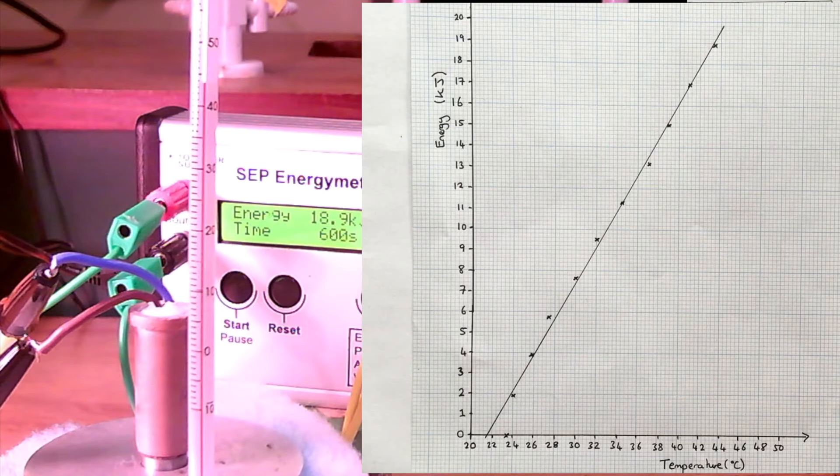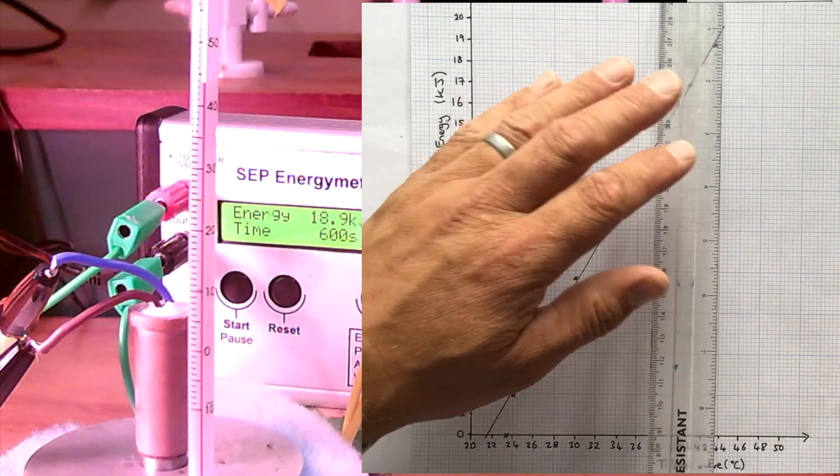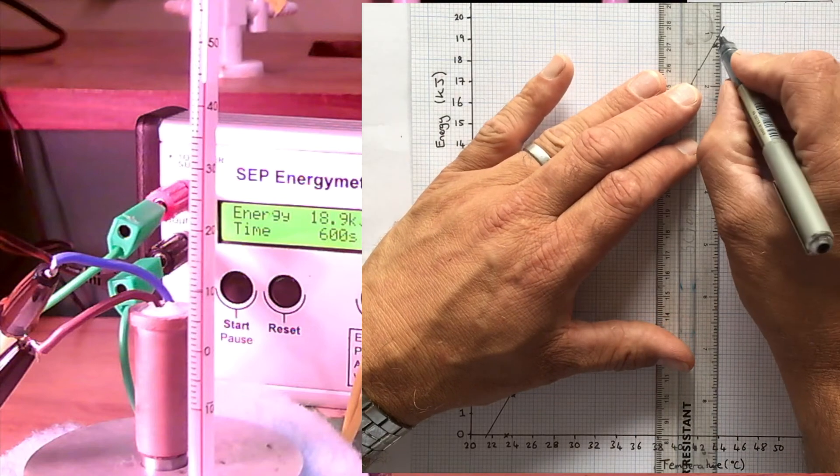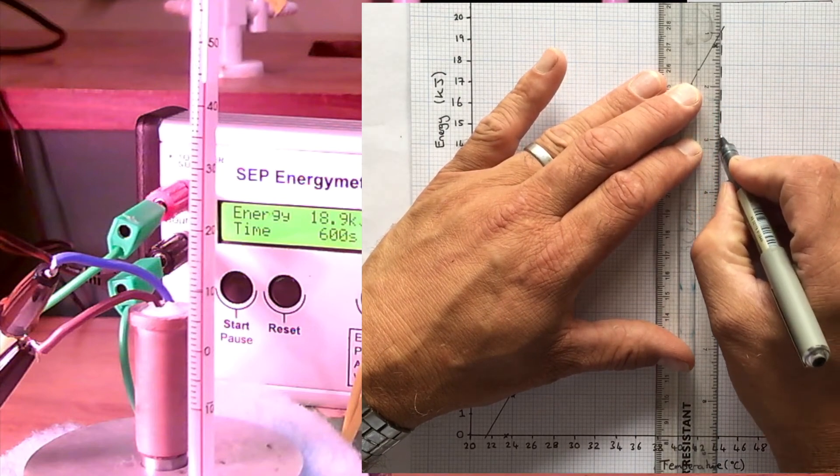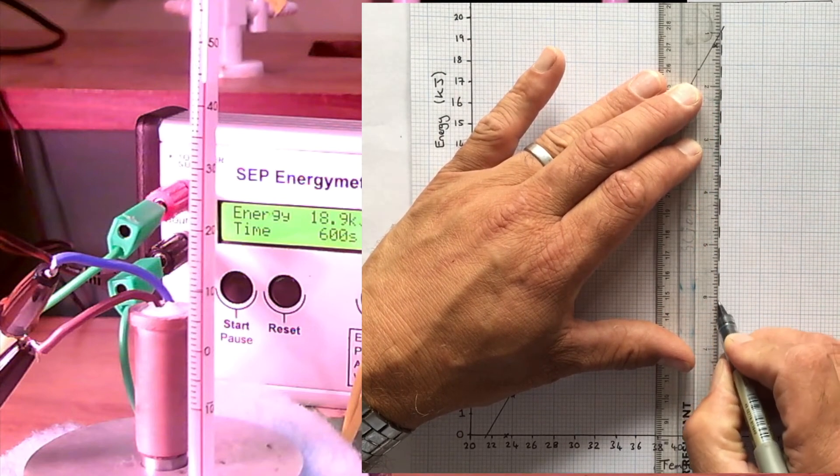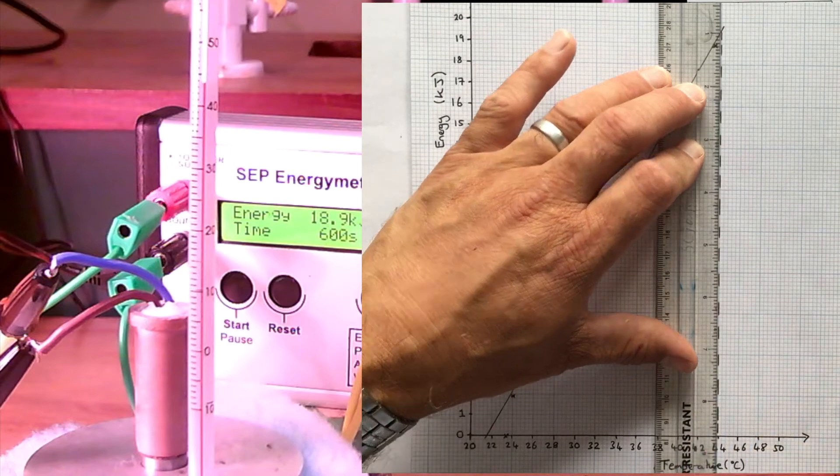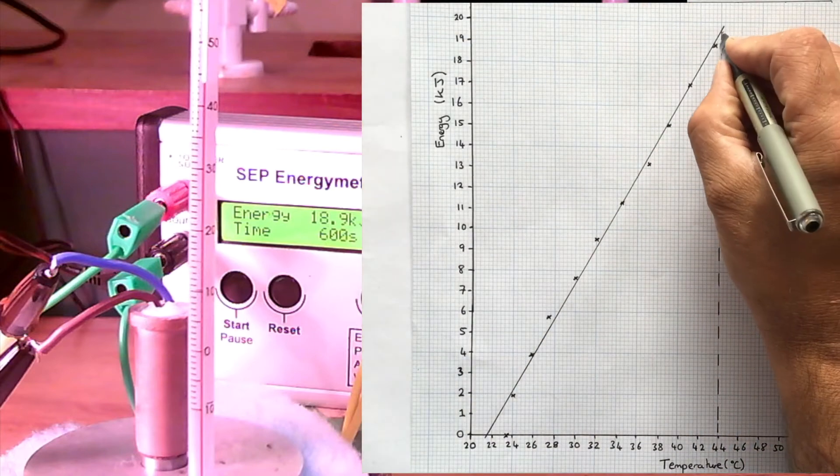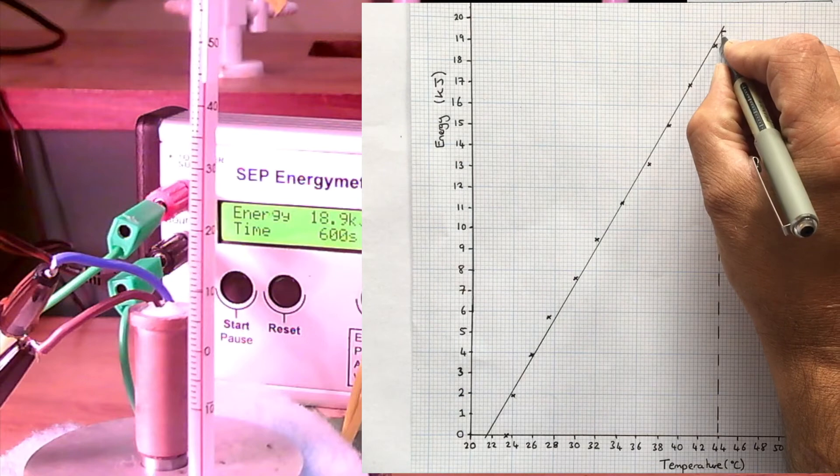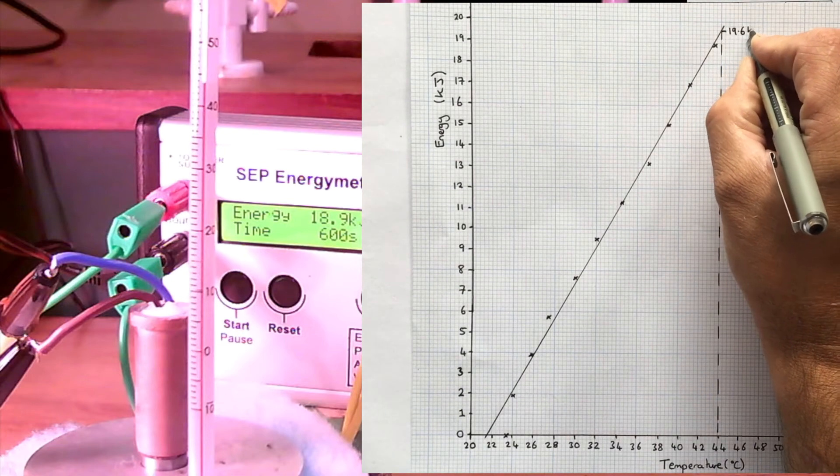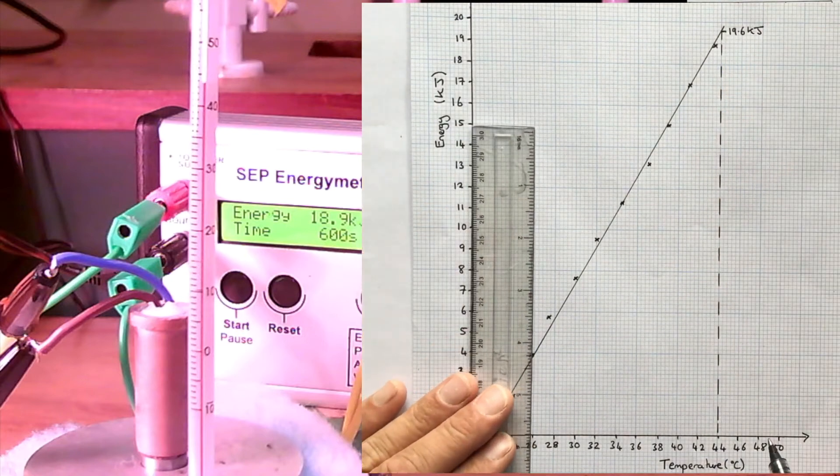So the next thing we want to do is to measure the gradient of the graph. So we're going to look at how the energy changes for a certain change in temperature. So I've just chosen 44 degrees, and at 44 degrees the energy was 19.6 kilojoules.